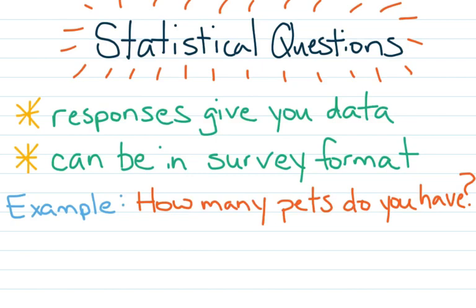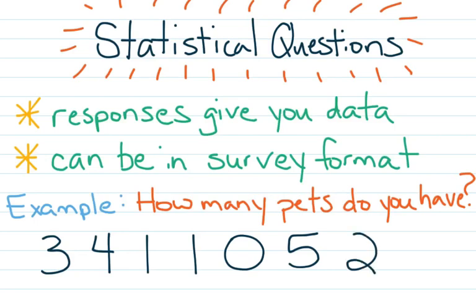Say you ask some people this question and you got a few answers back. One of your buddies said three, Grandma said four, your cousin-in-law said one, your other cousin by marriage said one, your dog said zero because dogs can't have pets, your crazy aunt with five cats told you she had five, your teacher has two, and your principal has three. There you go, you got a set of numbers that you can now calculate statistics about, and we are going to use this data set to calculate the measures of center.